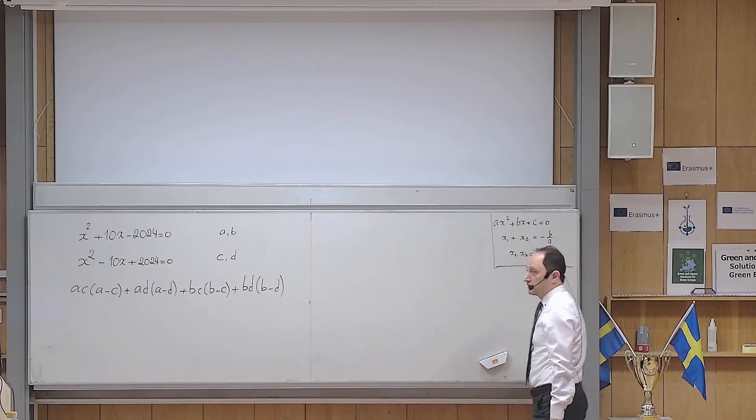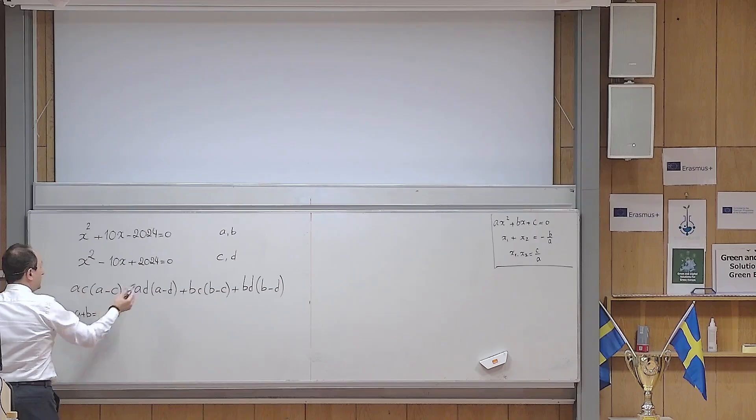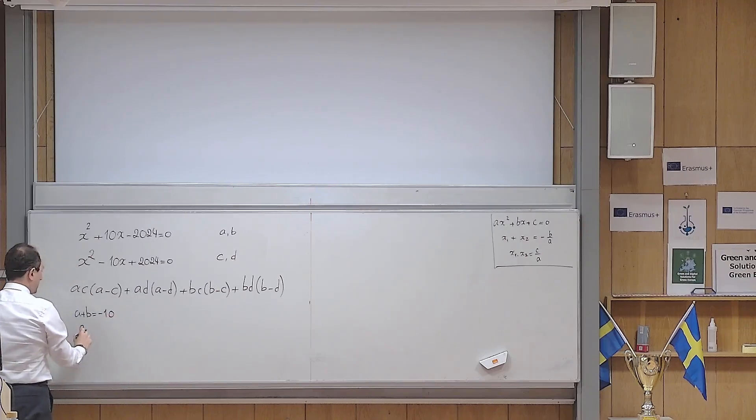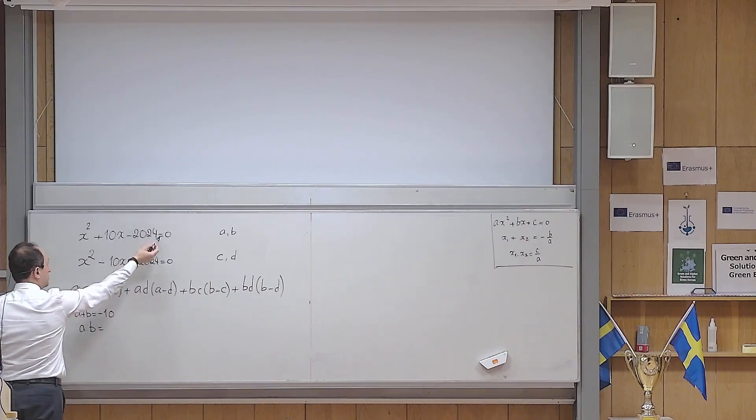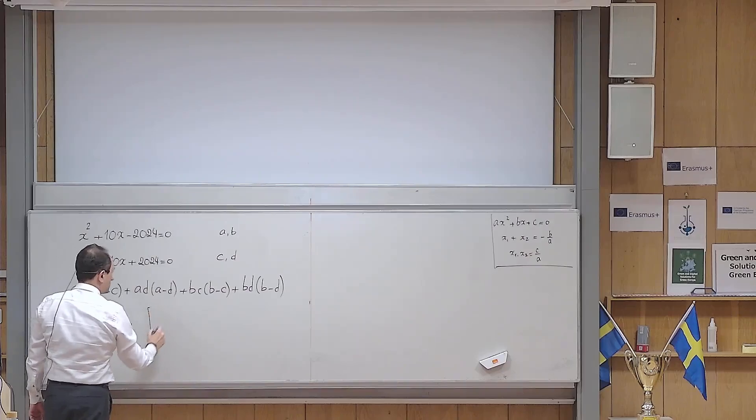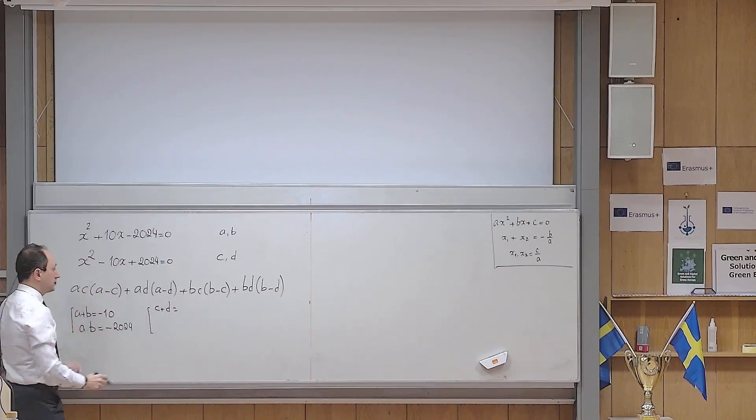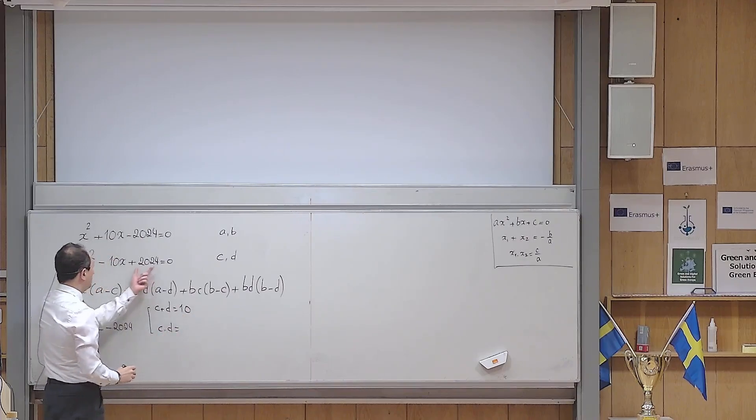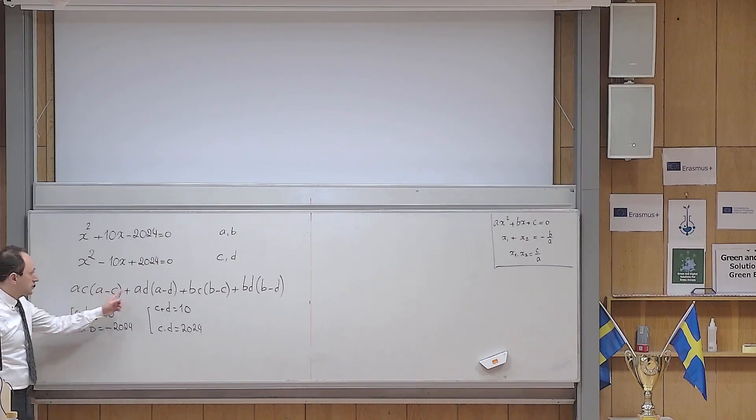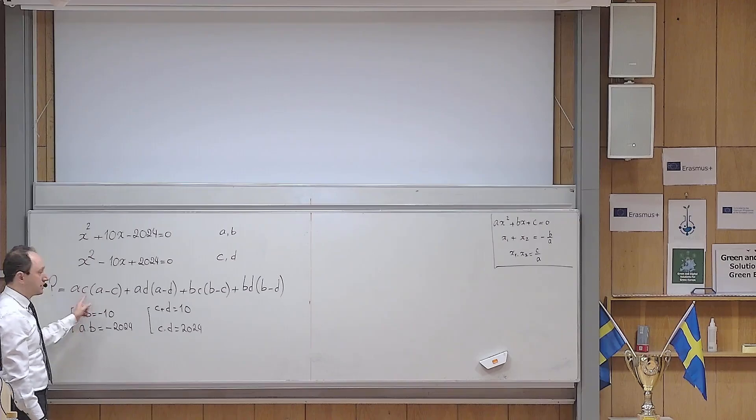So if I ask you what is a plus b, it becomes minus this coefficient divided by that coefficient which is 1, so it becomes minus 10. And a times b is minus 2024. For c and d, c plus d becomes 10, and c times d becomes 2024. Hopefully, I should find the relation between this expression that I am supposed to find its exact value with these expressions.